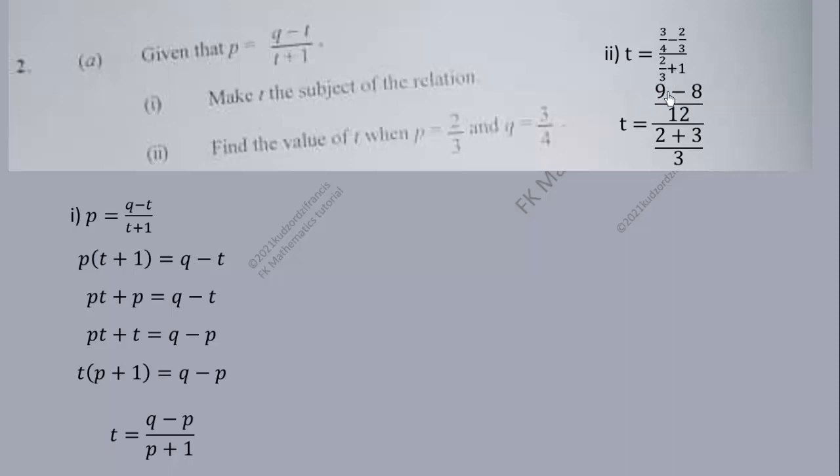When we find the LCM, 4 goes into 12 three times, 3 times 3 is 9. Then 3 goes into 12 four times.